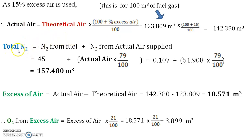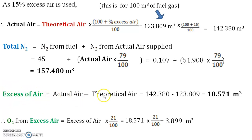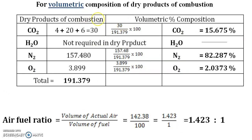Using this actual air, calculate the total nitrogen: nitrogen from the fuel plus nitrogen from the actual air. Nitrogen from the actual air is calculated by multiplying the actual air by 79 divided by 100. Then find the oxygen from the excess air: excess air equals actual air minus theoretical air, and then multiply that quantity by 21 divided by 100 to get the oxygen in the excess air.